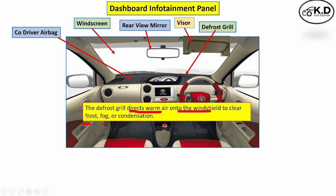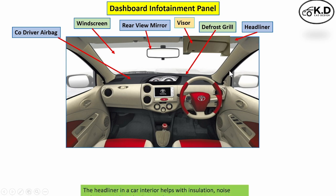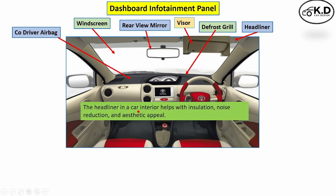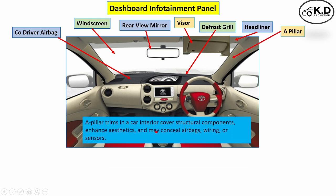The next part is the headliner. The function of the headliner is to provide insulation and cushioning for noise reduction, reduce heat, and give an aesthetic appearance. The next part is the A-pillar, which hides the structural component and provides space for wire harness, sensors, and airbags.